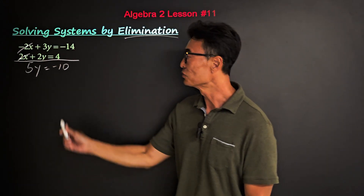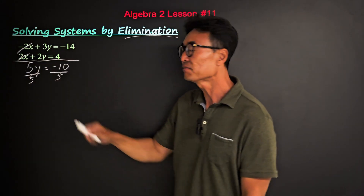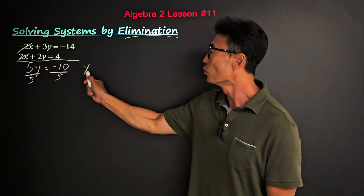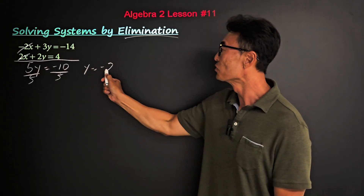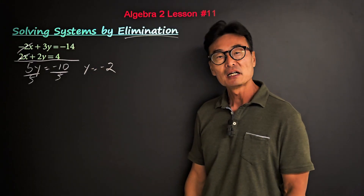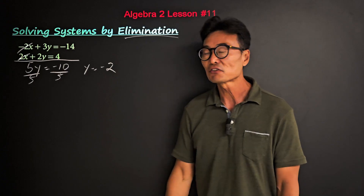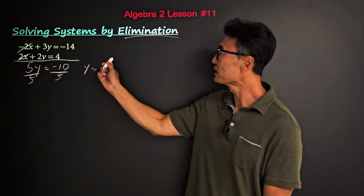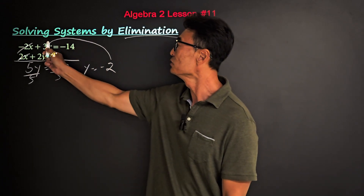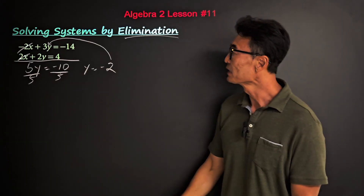To solve for y, we divide by 5 and get y equals negative 2. Then to solve for x, we take that negative 2 and plug it into either the first or the second equation.